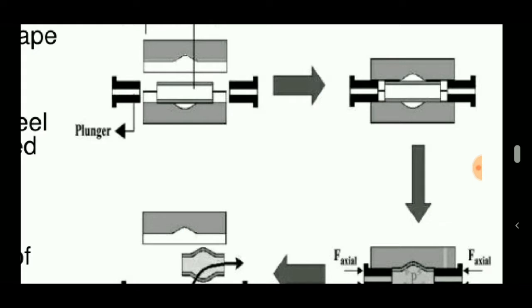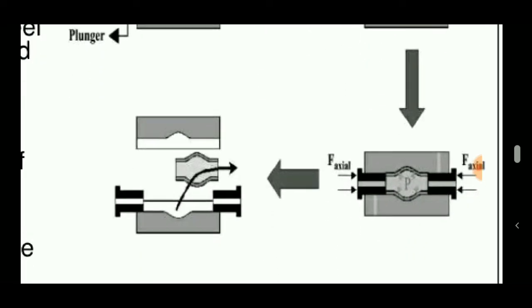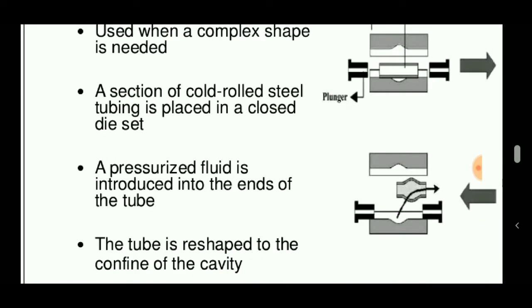Then the two molds come together to hold this tube, and pressurized fluid is allowed to flow inside the tube so that the tube bulges and takes up the shape of the mold cavity.